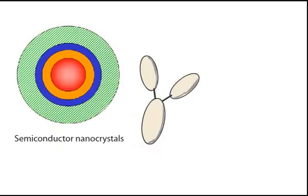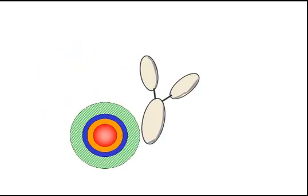More recently, semiconductor nanocrystals containing heavy metal cores, also known as quantum dots, have been introduced for use in flow cytometry. When excited by UV or violet light, excitation of the nanocrystal can lead to bright fluorescence. The emission wavelengths can be tunable by changing the size of the nanocrystal.